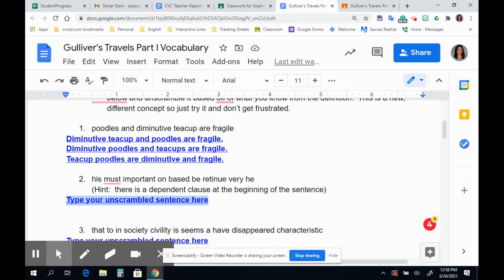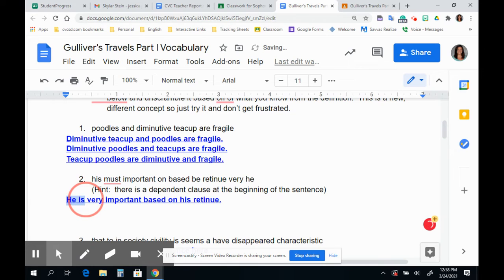So let's give this a shot. His must important on based be retinue very he. So let's see here. If I say he is very important based on his retinue. That sentence makes sense. Well, here's a problem, right? First off, I didn't use be. I also added is. So that's not going to work. I can't use that sentence because I changed the words that were given to me and I left out very and I left out other things that I cannot use. So this sentence would not work. I cannot use that as an example. So let's try something else. I can use my one that doesn't work. He is very important based on his retinue. So obviously we're talking about someone of importance.